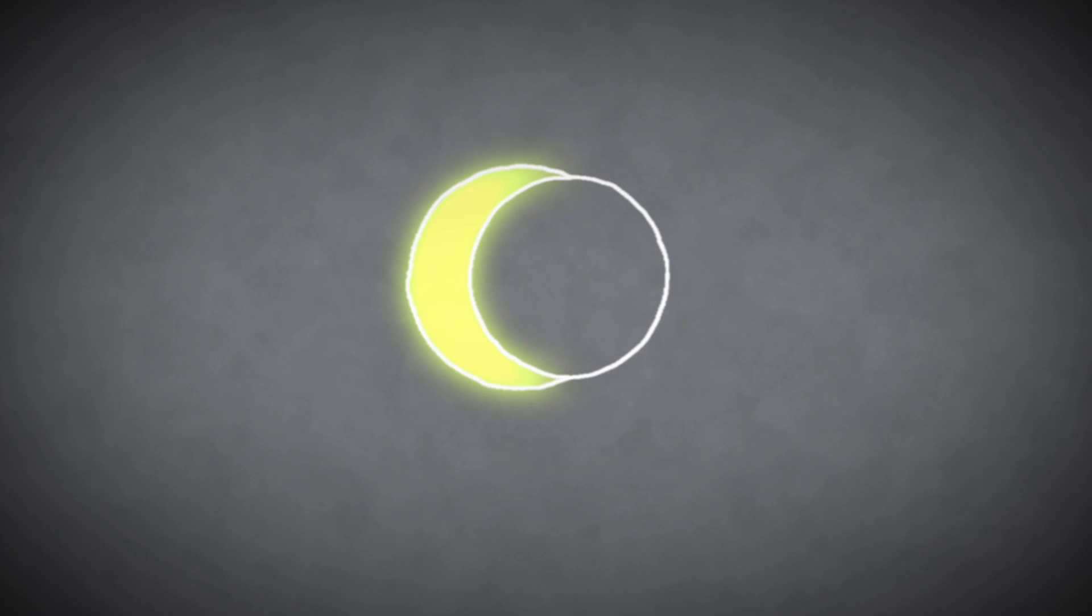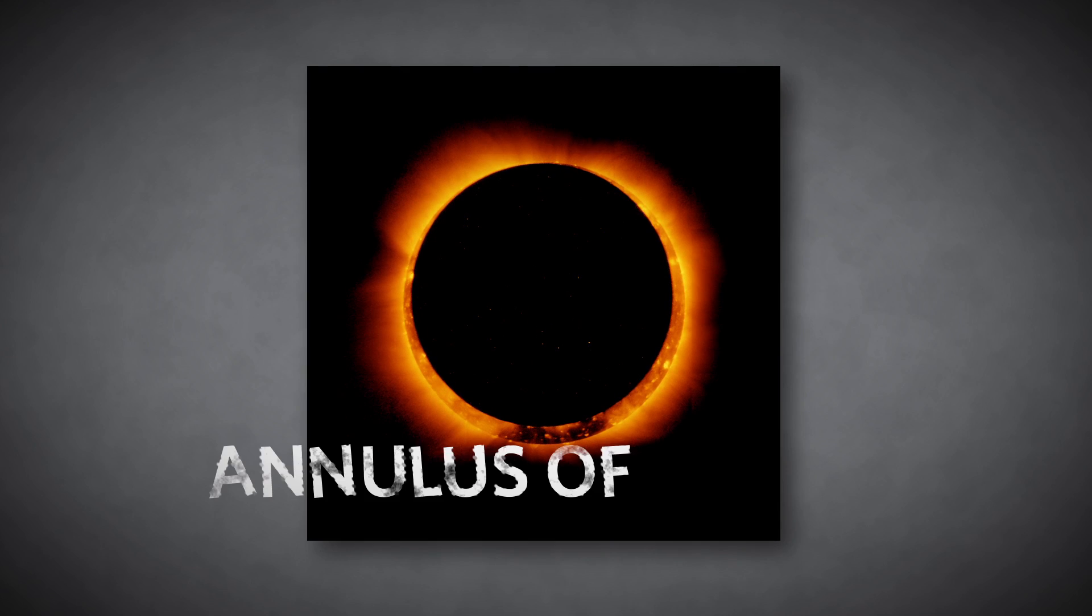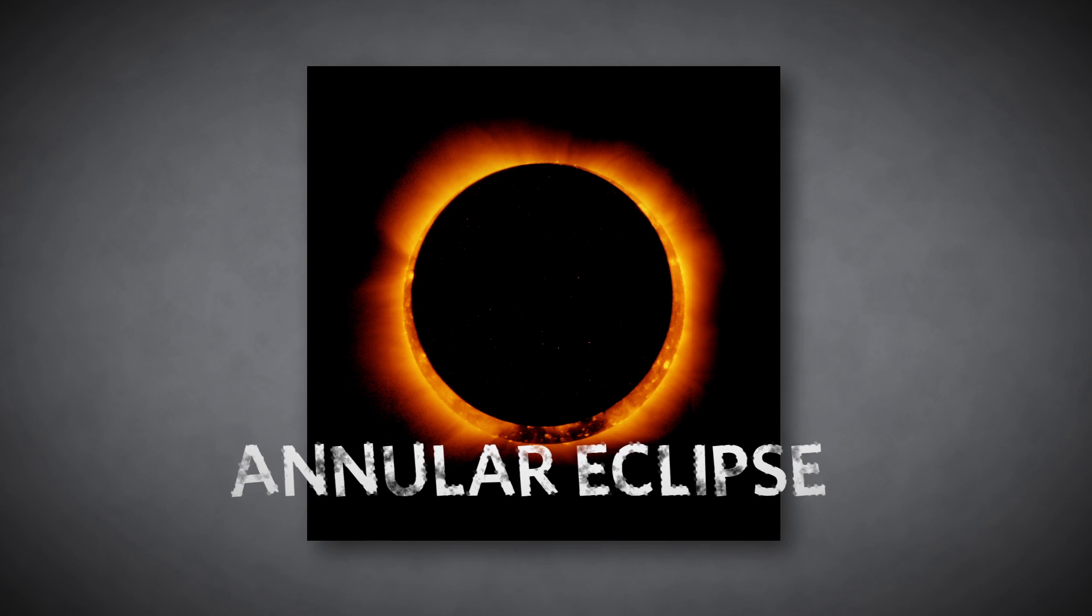This leaves a thin ring of light visible around the moon's silhouette. This bright annulus of light washes the sun's corona from view.